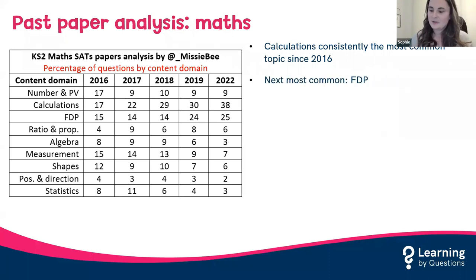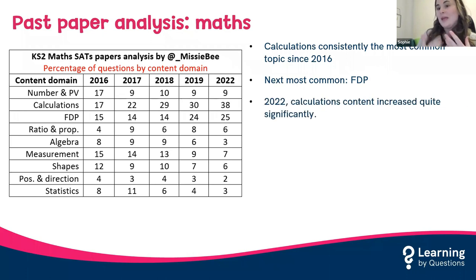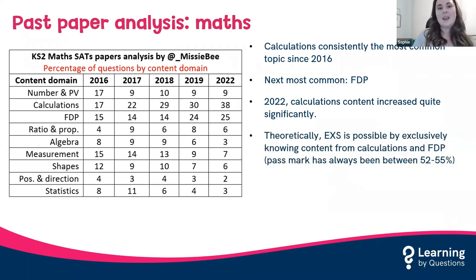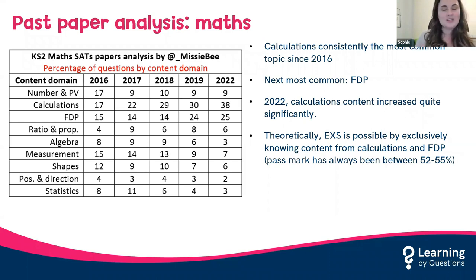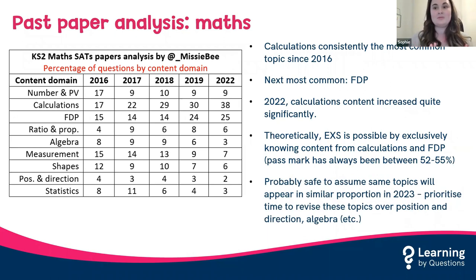You can see that across all years, calculations — the four operations — has been the most common topic. That makes sense because the four operations are needed as a skill in most other content domains. Closely followed by fractions, decimals and percentages as the next most common. In fact, the pass mark for all years so far has always been between 52% and 55%. The content of fractions, decimals, percentages and calculations together in 2022 was 63% — so theoretically you could pass a maths SATs paper just knowing those two content domains.